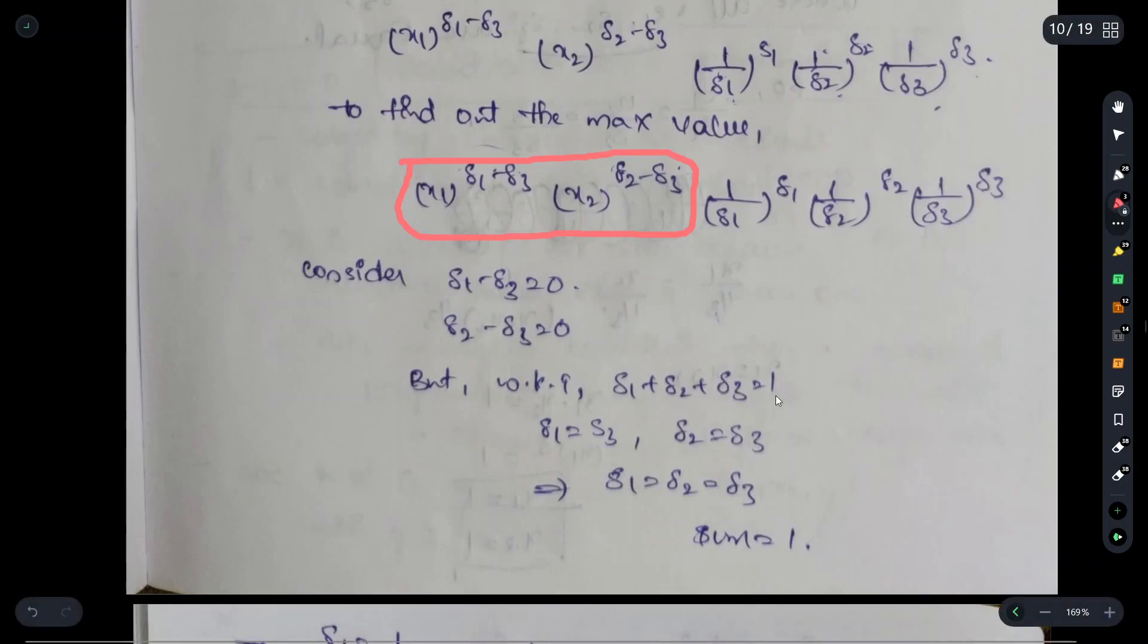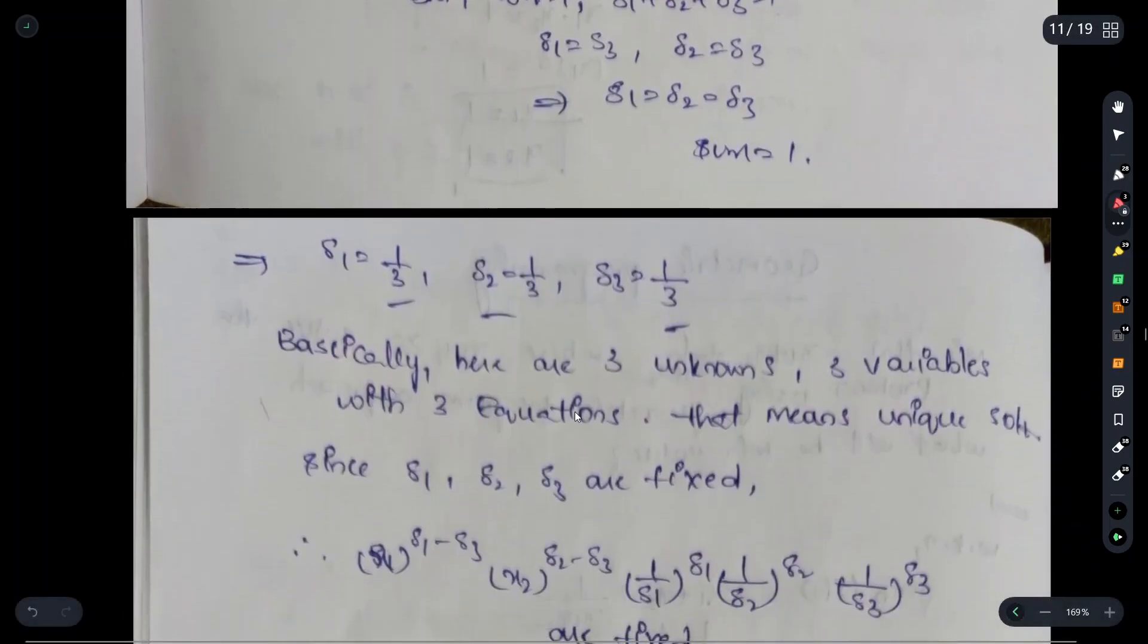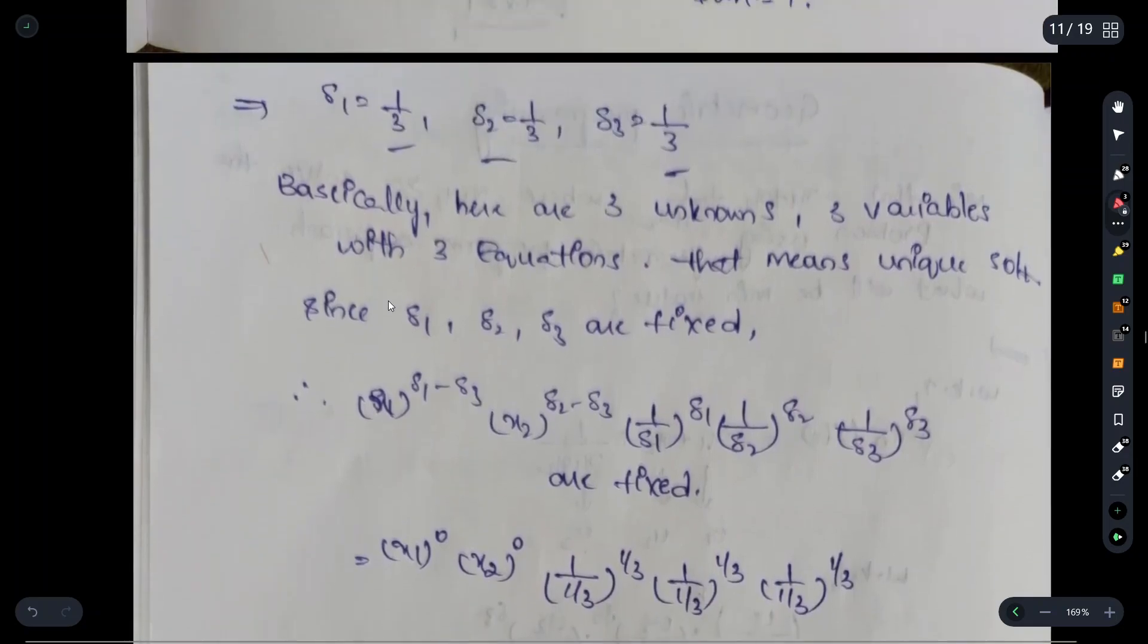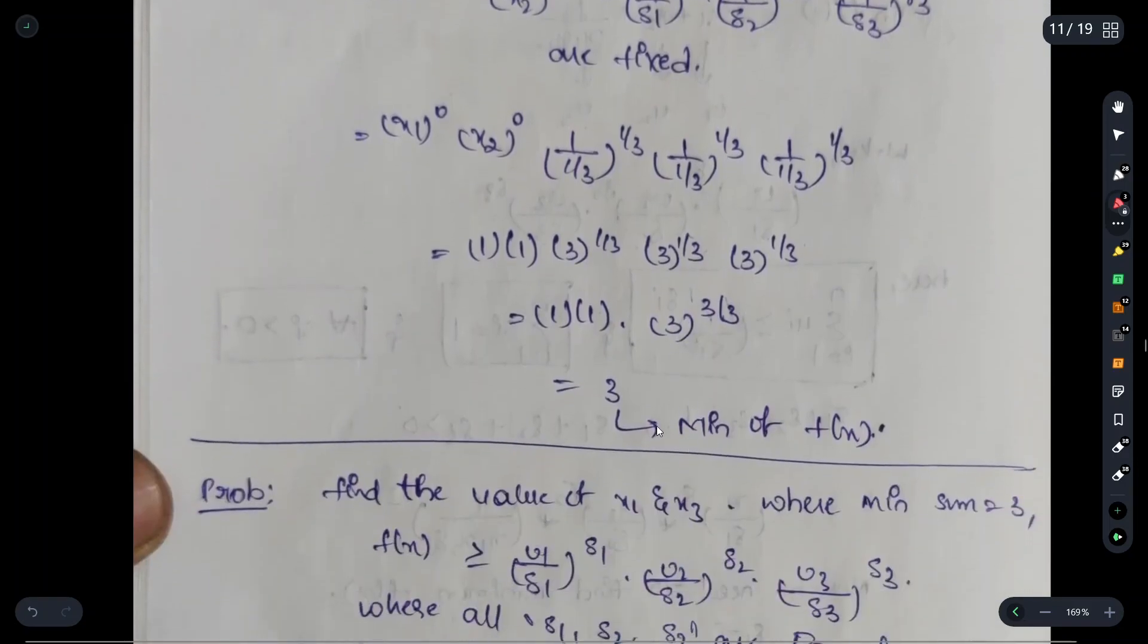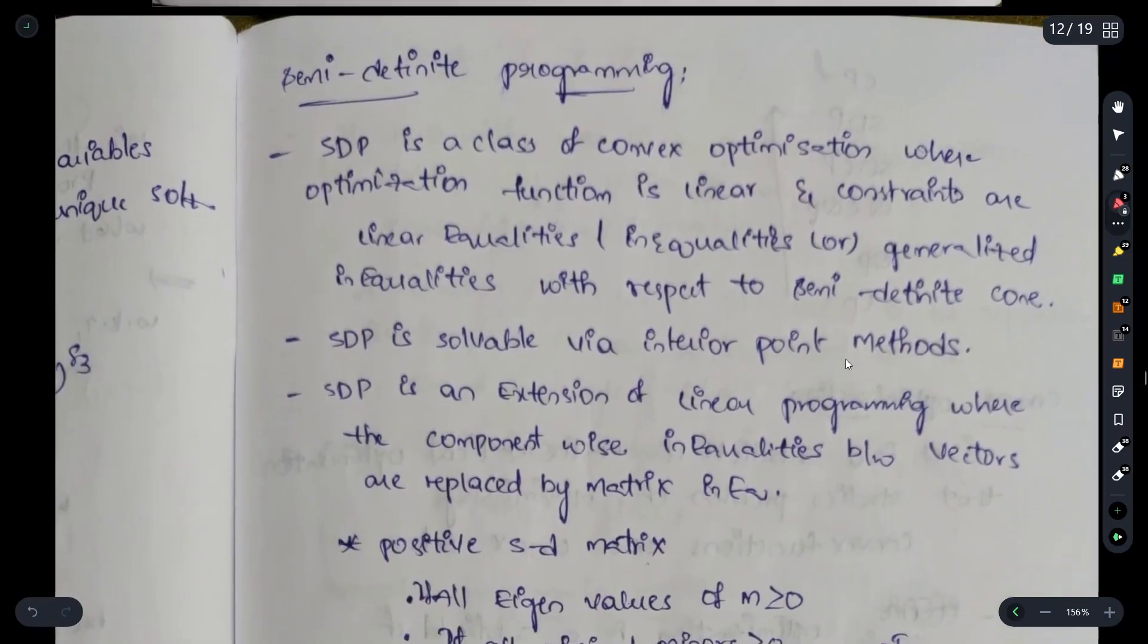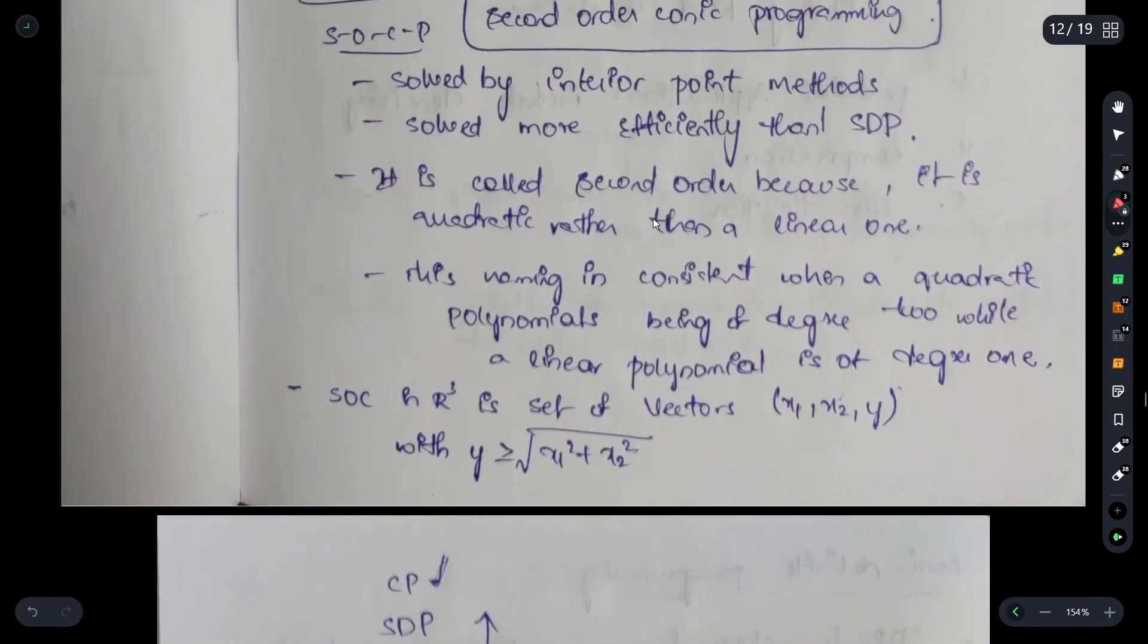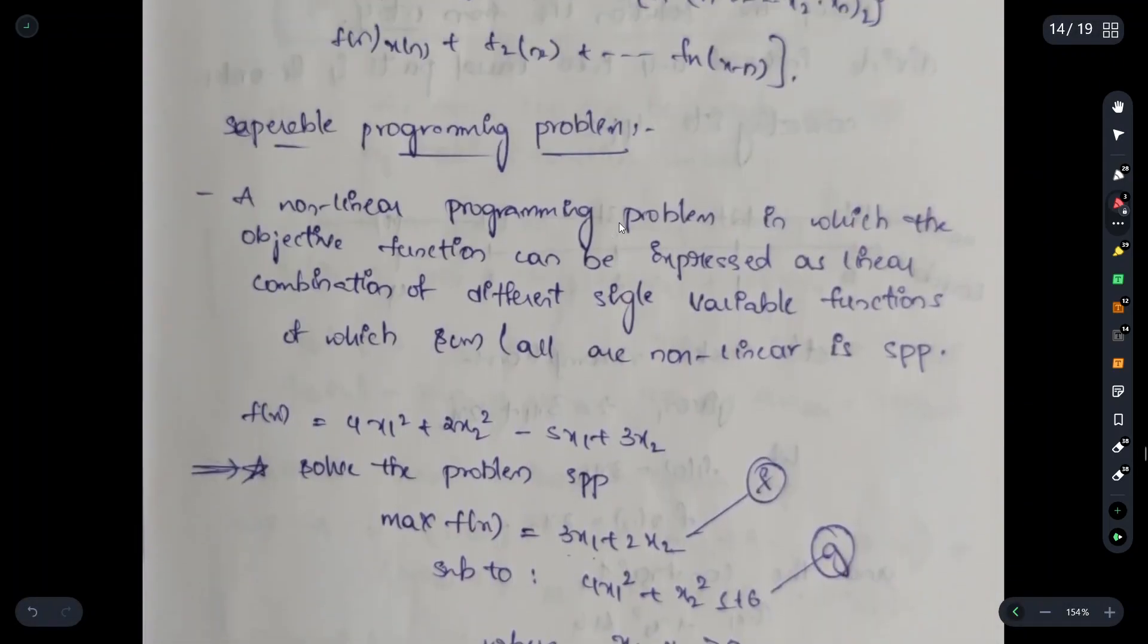We will consider the value as 1. Those three values, when divided into 3 parts, we get 1 by 3 as the value. We find 1 by 3 and write it. Then we need to substitute these values in the equation: x1 to the power of 1 by 3 minus 1 by 3, x2 to the power of 1 by 3 minus 1 by 3. After solving these equations we will find the minimum value of f of x. That is geometric programming.